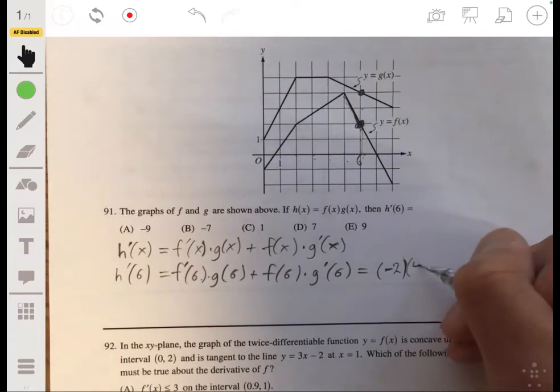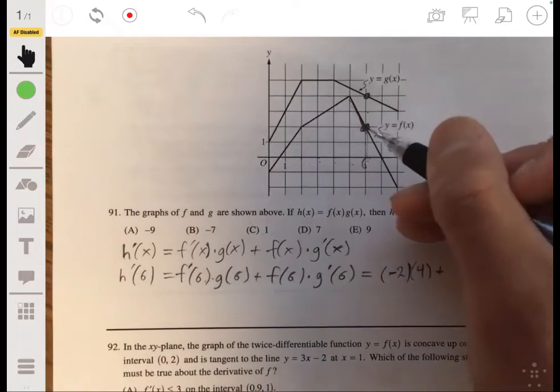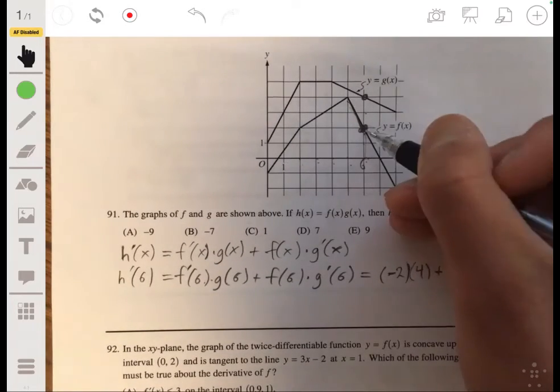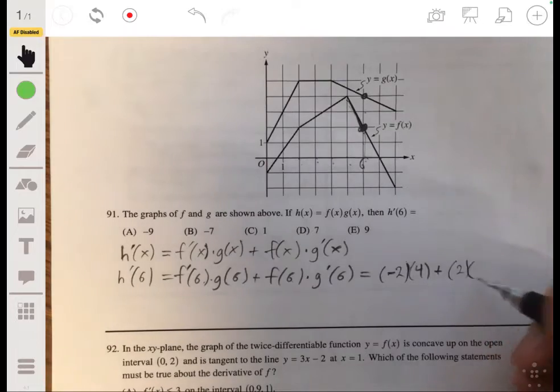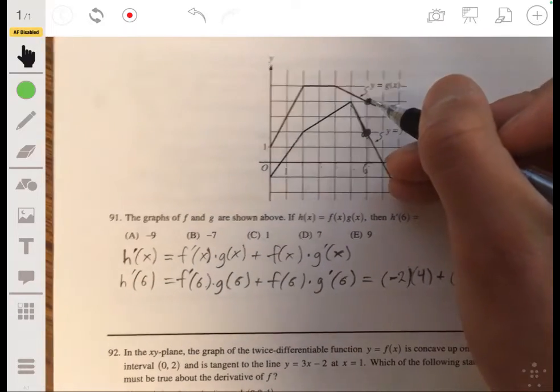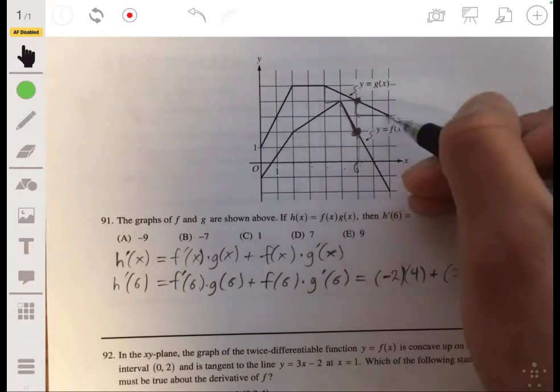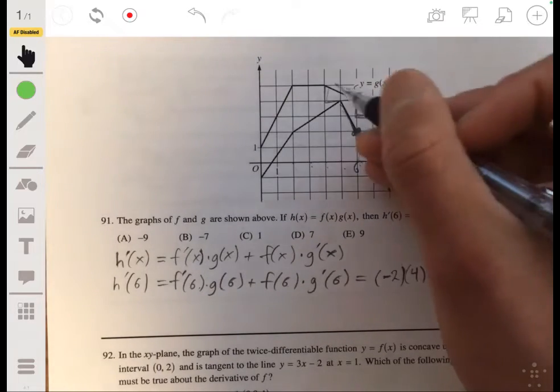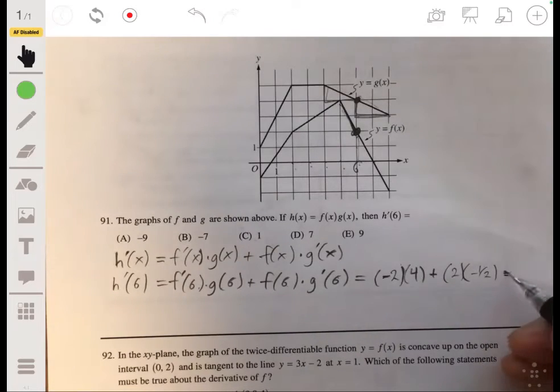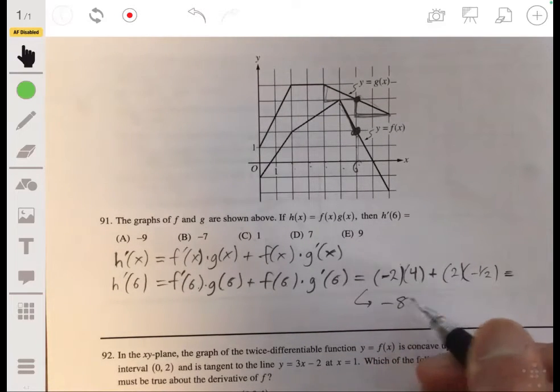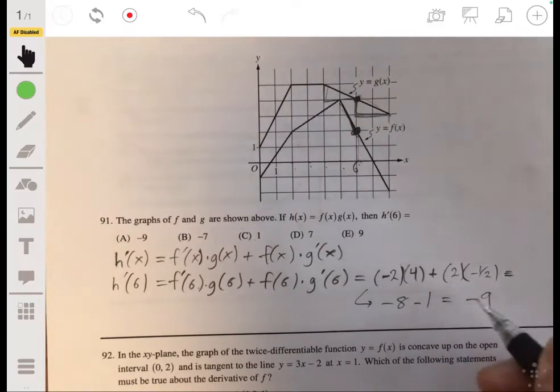So we get negative 2 times 4 plus f of 6. So now we look at the actual value. The value of y at this point is just 2 times g prime of 6. So we go back to this point and we look at the slope. Negative, negative 1 half. Remember this slope line right there. So we get negative 8 minus 1. So we get negative 9.